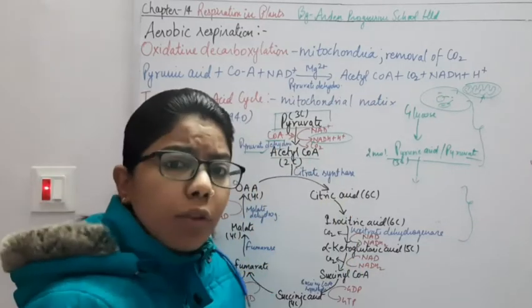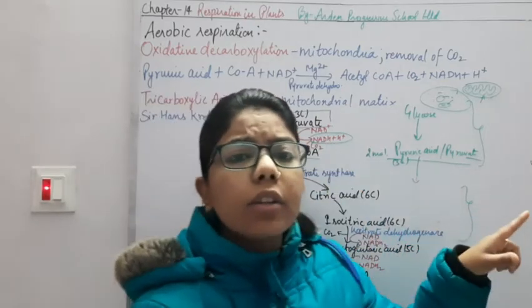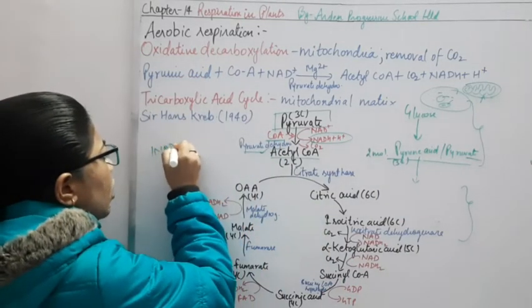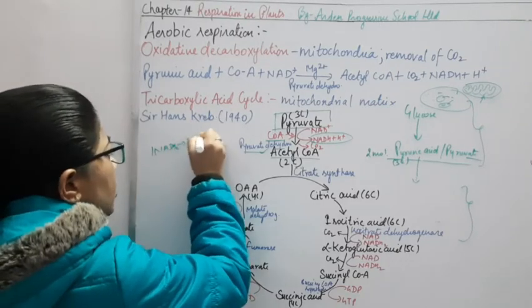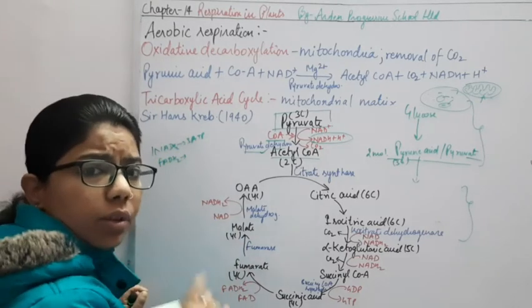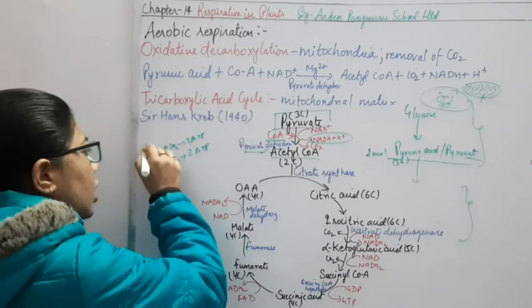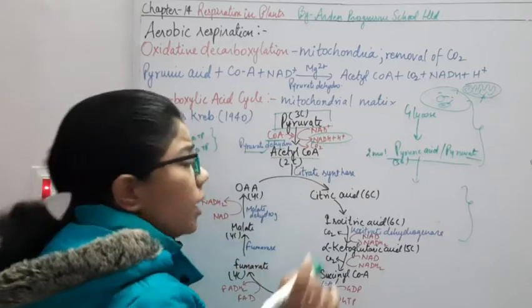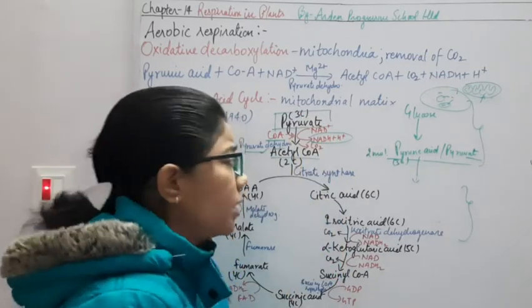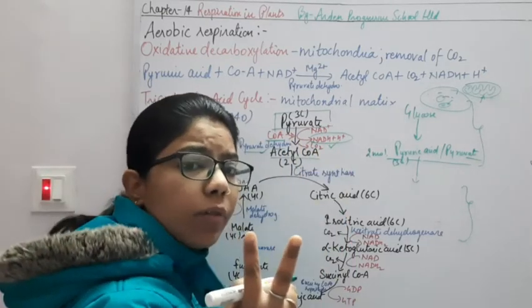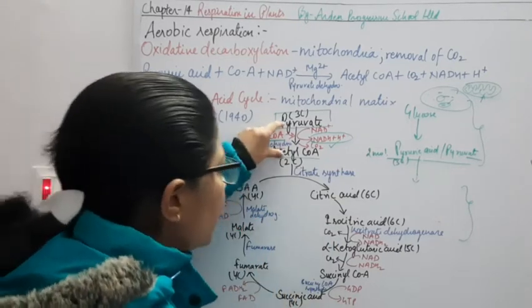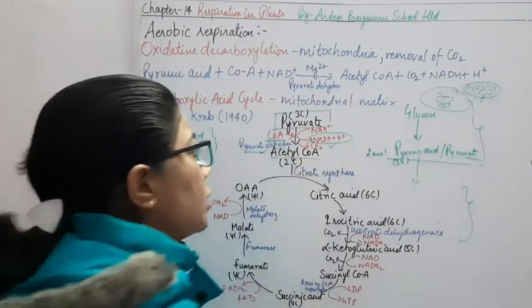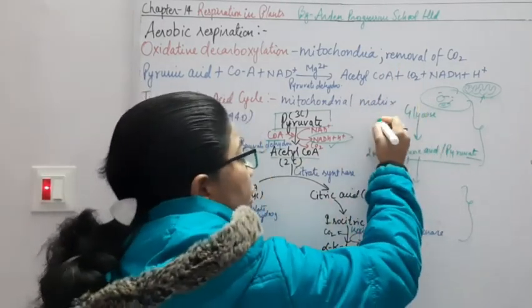We know that ATP is the ultimate source of energy. NADH₂ has to go into the electron transport system so that it can give ATP. One NADH₂ gives 3 ATP molecules. We also get FADH₂, and one FADH₂ gives 2 ATP molecules. From this linking step, since we have 2 molecules of pyruvic acid, from each we get 1 NADH₂, giving 2 NADH₂ total. So 2 NADH₂ will give 6 ATP when entering the electron transport chain.